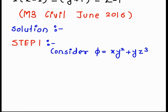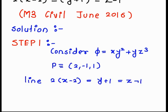Step 1: Consider phi = xy² + yz³. In this step, we always write the given information. Point P is (2, -1, 1), and the line equation is 2(x-2) = y+1 = z-1.